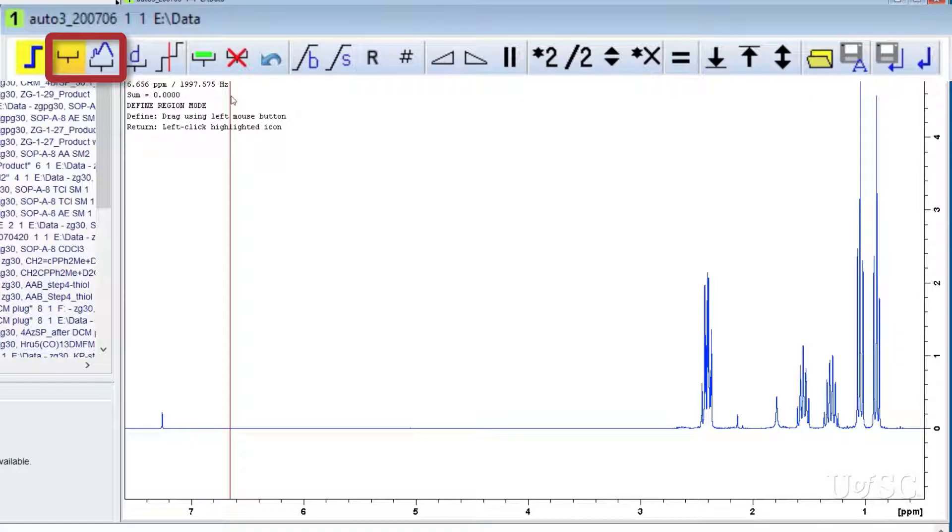The difference between these two is that the plain bracket is used when your peaks are all separated from other peaks and the baseline is flat going into and out of the peaks. The wavy line icon does a local baseline correction and is better to use when you are trying to integrate peaks that are near other peaks.